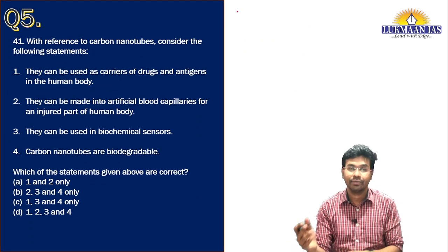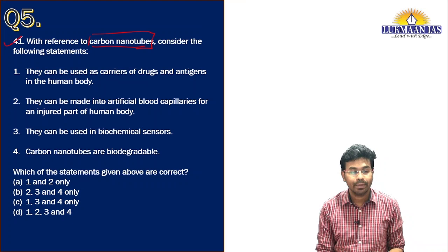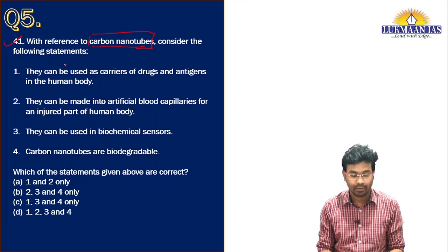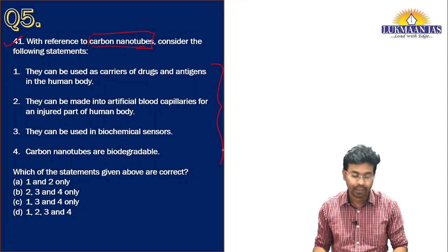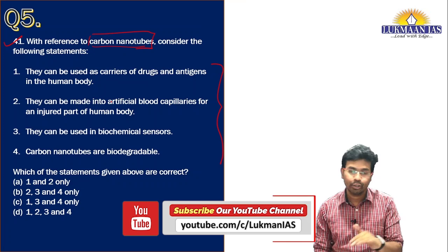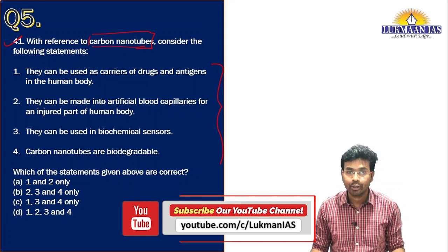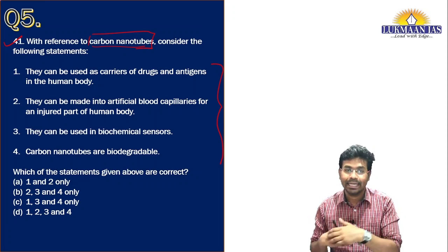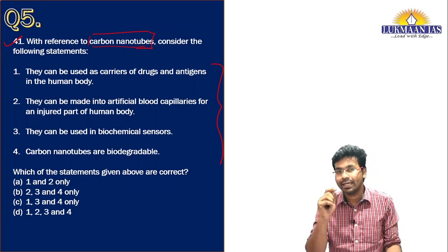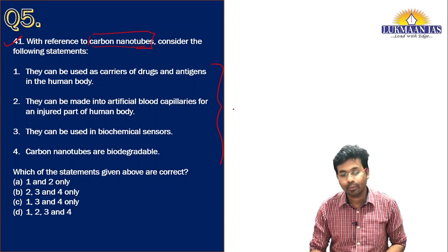Now let us move to the next question about carbon nanotubes. The question asks: with reference to carbon nanotubes, consider the following statements. Carbon nanotubes are allotropes of carbon, made up of graphite, and they are cylindrical in shape. Their diameter is in the nanometer range. Properties of CNTs include small size, light weight, and they are strong.